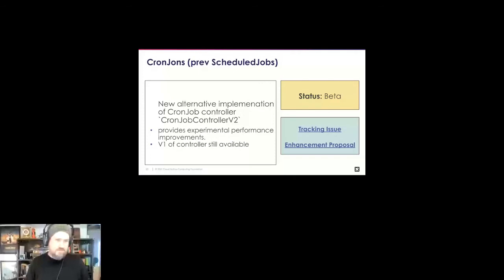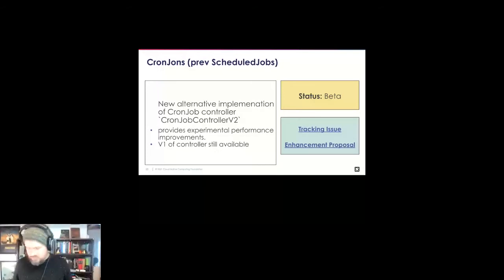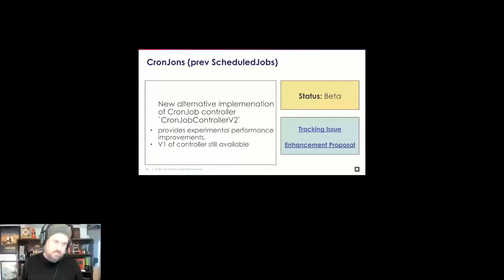Next up is batch/cron jobs. As mentioned, cron jobs were previously called scheduled jobs and became beta in 1.8. The goal is to not let things sit in any stage forever. Cron jobs are for time-related actions like backups and report generation, allowing tasks to run repeatedly or at any given point in time. This is moving to beta with dual controller support — the v1 of the controllers is still available.